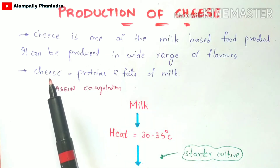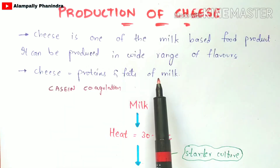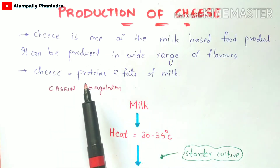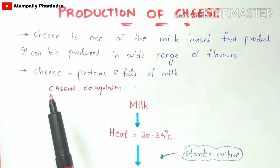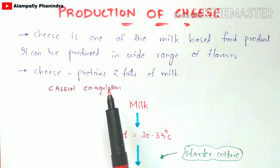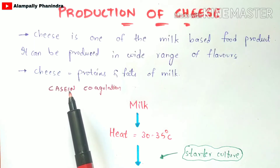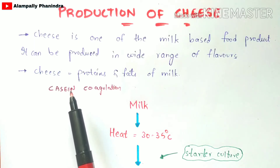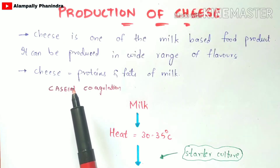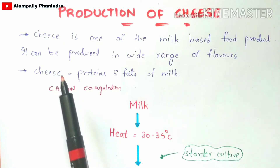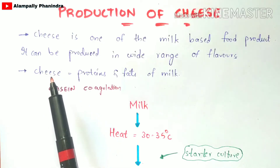How is cheese mainly prepared from milk? The main theme is casein coagulation. Casein is one of the milk proteins present in milk, and once those casein proteins are coagulated they get solidified, and in such a way it mainly leads to the formation of cheese.